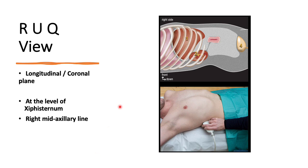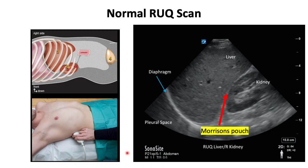The first potential space where fluid tends to collect is the hepatorenal space or Morrison's pouch. The curvilinear probe is placed in the mid-axillary line at the level of the epigastrium in a coronal section with the probe marker towards the head. The first structures encountered are the diaphragm, followed by the liver and the kidney. The potential space called Morrison's pouch is between the liver and kidney.